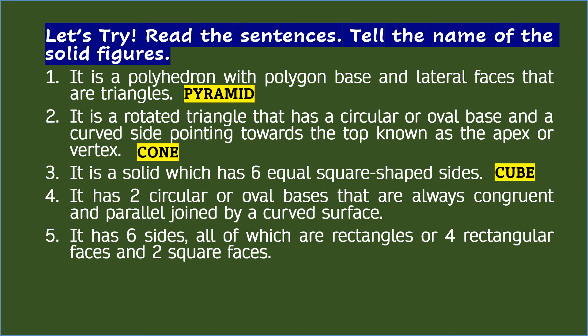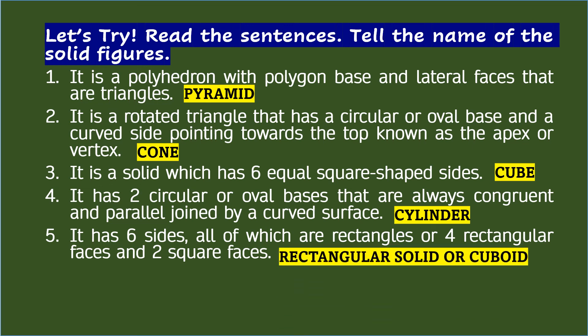4. It has two circular or oval bases that are always congruent and parallel, joined by a curved surface. The answer is cylinder. 5. It has six sides, all of which are rectangles or four rectangular faces and two square faces. The answer is rectangular solid or cuboid.